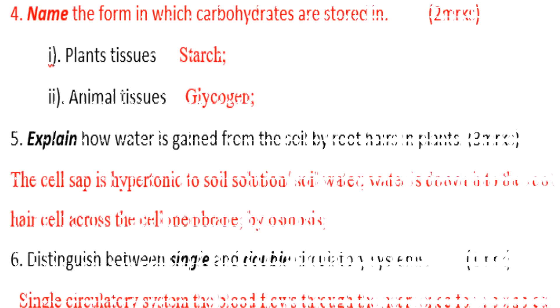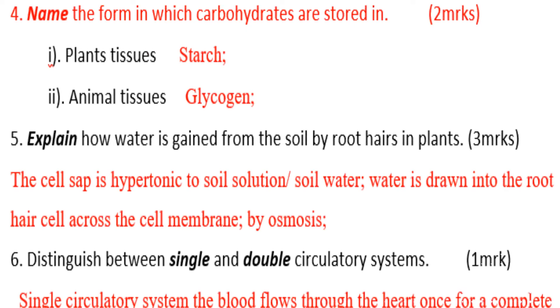Name the form in which carbohydrates are stored. Number one, plant tissues: starch. Number two, animal tissues: glycogen.